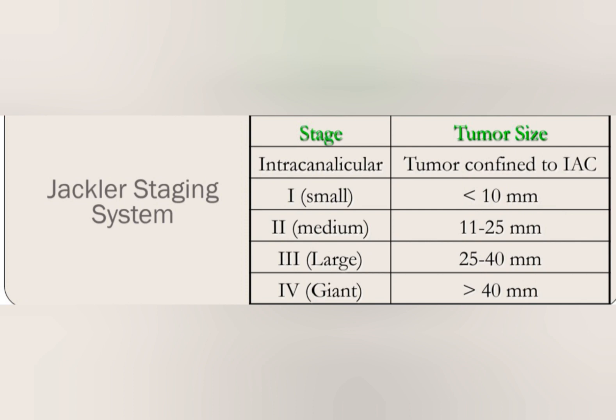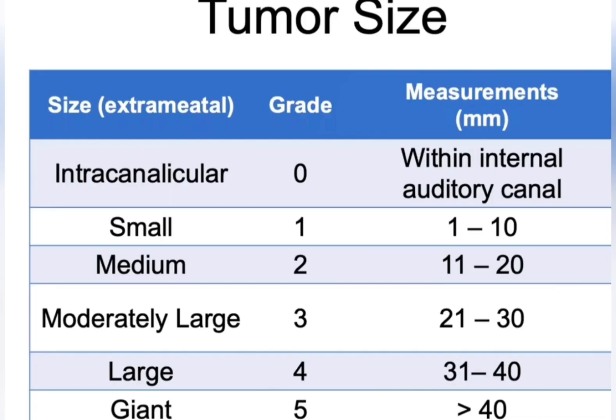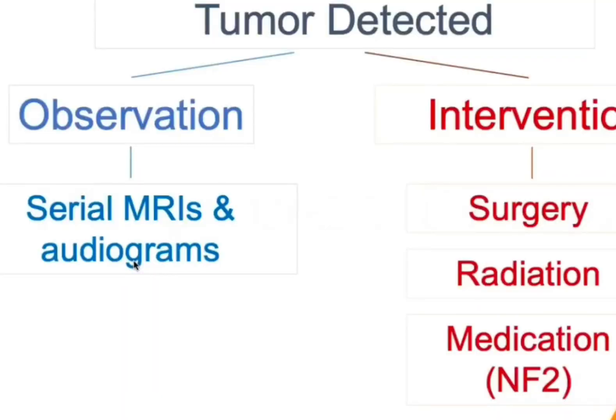The staging of the tumour is based on the cisternal component, not the intracanalicular component — intracanalicular is simply described as confined to the IAC. Small is up to 1 cm, 1–2 cm is small-medium, medium is 2–3 cm, moderately large is 3–4 cm, and giant is more than 4 cm of the cisternal component. We focus on the cisternal component because it increases intracranial pressure and compresses the brainstem.